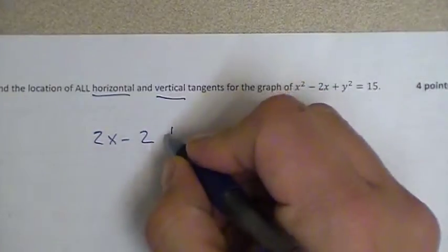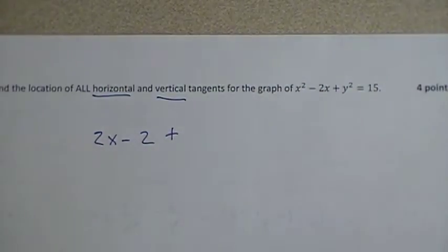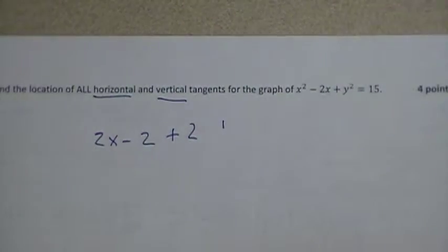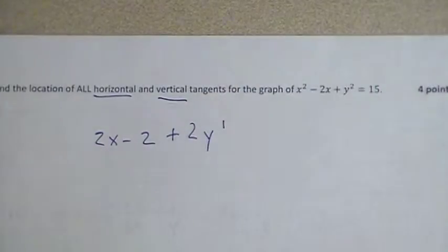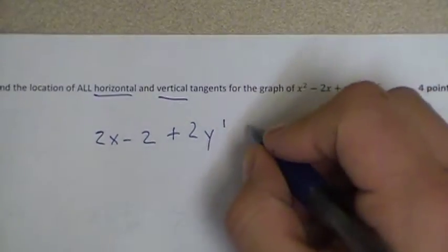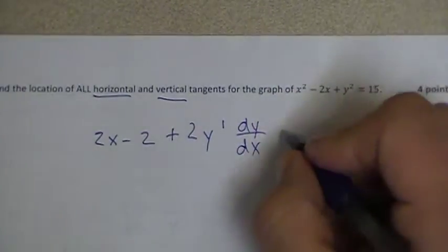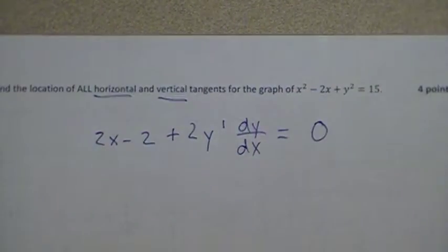The derivative of y² requires a quick chain rule, because remember y is a function of x, so we have an outer function, something squared. The derivative of something squared would be 2 something to the first. The inner function stays as the base, and then we finish the chain rule by multiplying by the derivative of the inner function, and then the derivative of 15 would be 0.